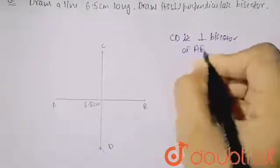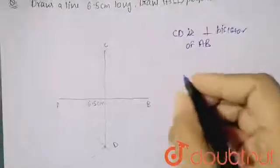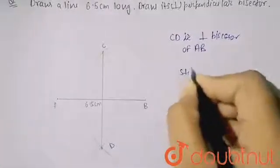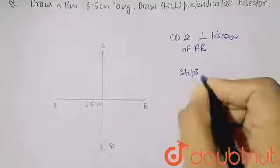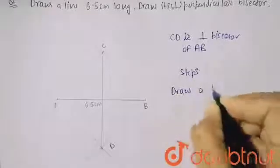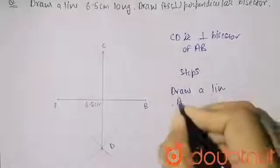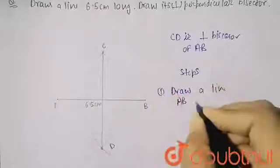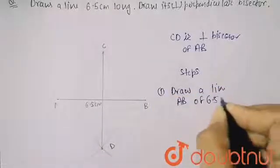And if you want to write steps of construction, the steps can be like this: Draw a line AB of 6.5 centimeter.